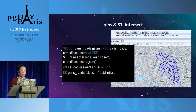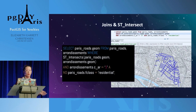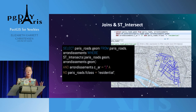You can do things like use the ST_Intersects function to join two separate tables. So I have my neighborhoods table and I have my roads table — and here's the query where I can find the roads that are residential in Arrondissement 3. And you can see here how that query result comes out.